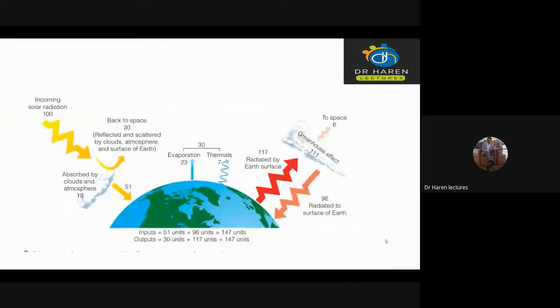Now, we will try to understand it from the picture. The sun produces 100 units of radiation. What will reach the Earth?